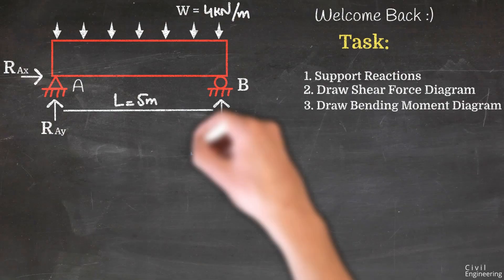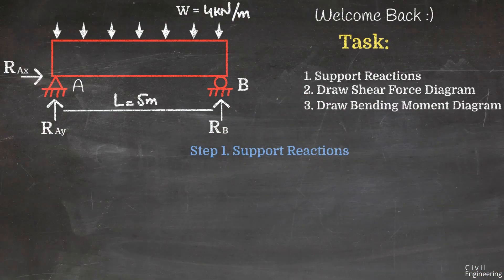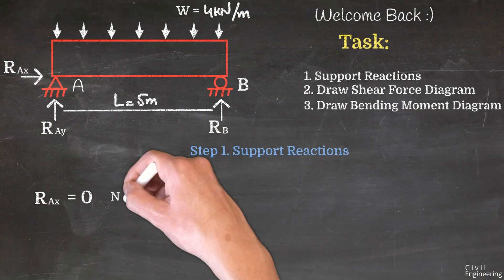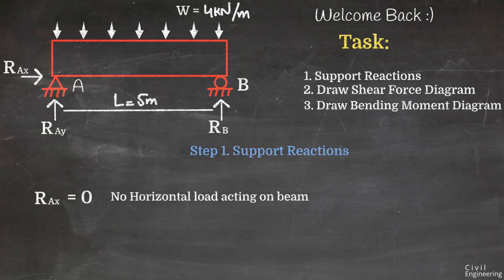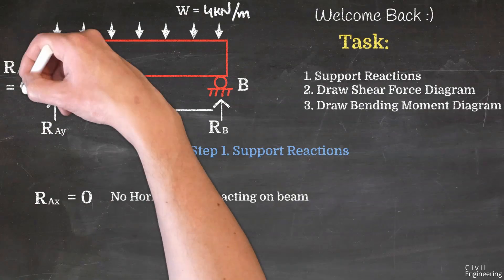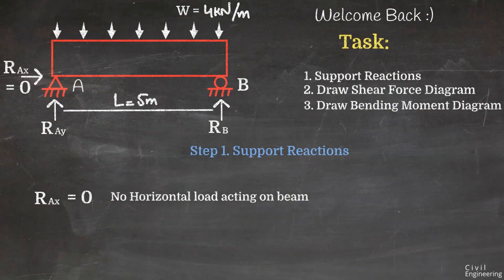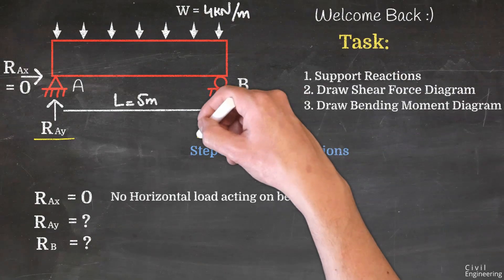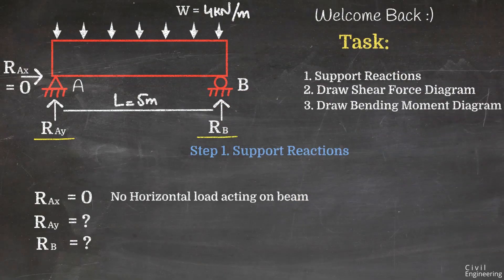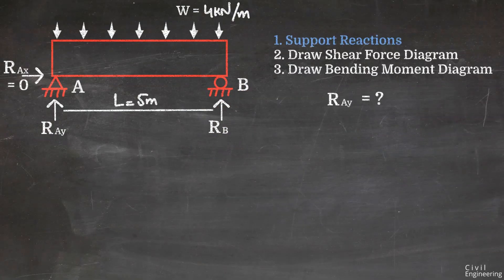We start with the first task: support reactions. RAX is equal to zero because there is no horizontal load acting on the beam. The two unknown reactions are RAY and RB, since there is a vertical load acting on the beam.